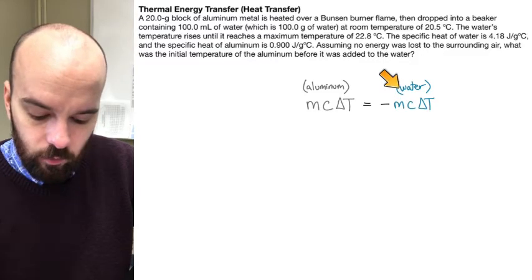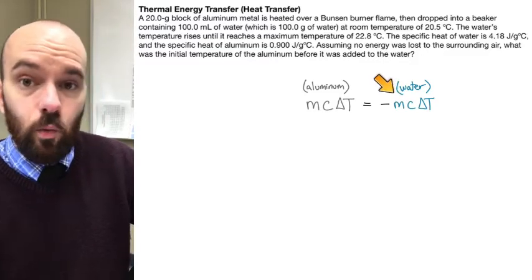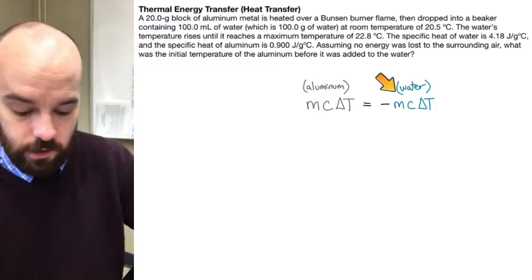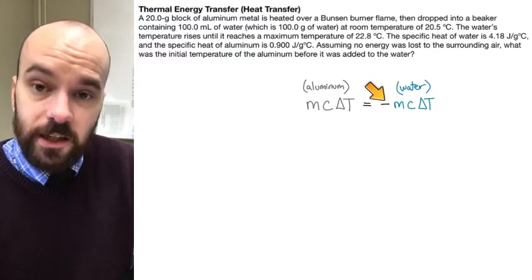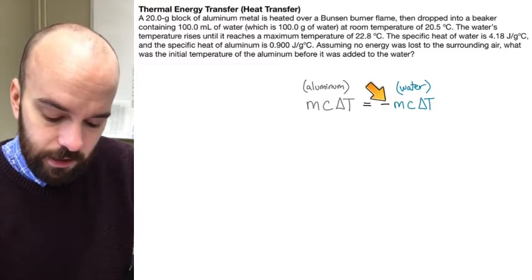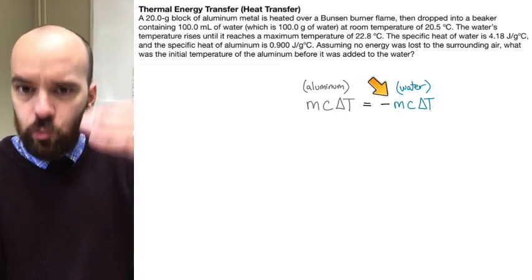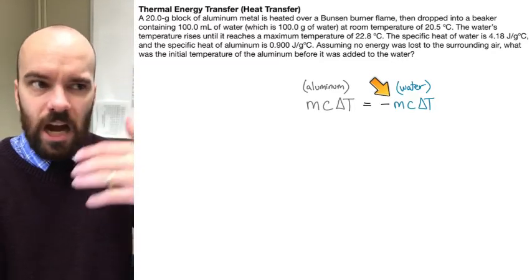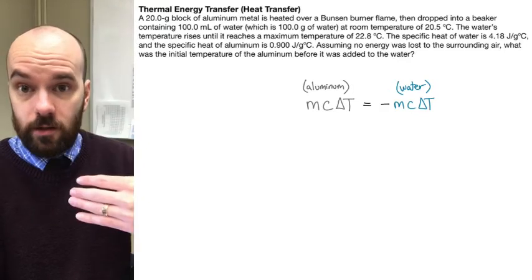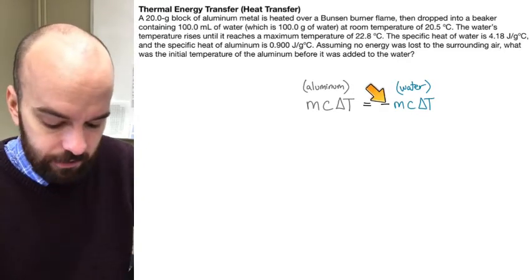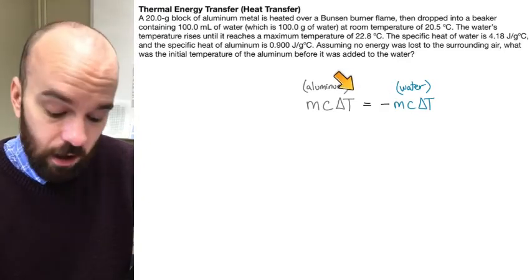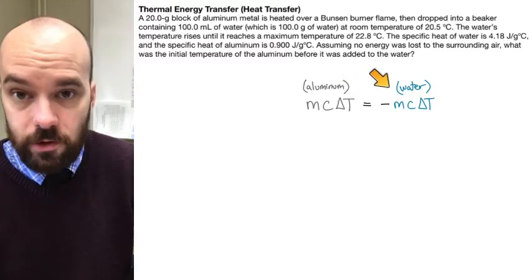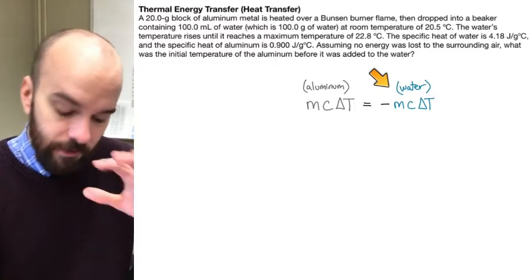The water's MC∆T represents the amount of energy that the water is going to gain while these two things are mixing and coming to a temperature equilibrium. There's a negative sign here — the negative sign means that one temperature will increase and the other will decrease. We have to have a negative sign to show that however much one is gaining, the other one is losing that same amount. And they're equal because all of the energy of the aluminum will be transferred to the water, so the amount that the aluminum loses equals the amount that the water gains. This is our starting equation for any thermal energy transfer problem like this.